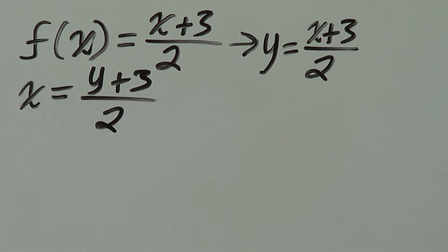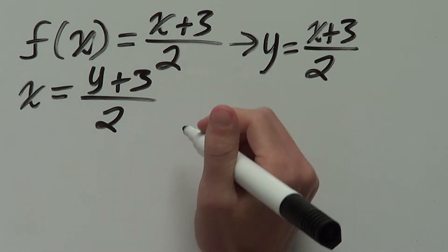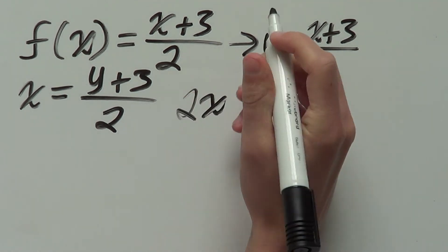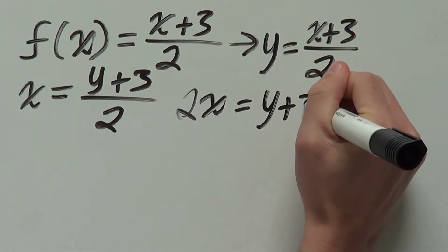Next up, we want to solve for y. Get y all by itself on one side. First, let's get rid of this 2 over here by multiplying both sides by 2. That gives us 2x equals y plus 3.